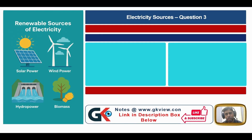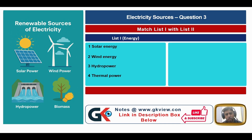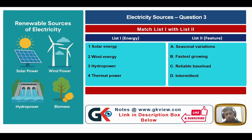Question number three: match List 1 with List 2. List 1 contains energy forms: 1) solar energy, 2) wind energy, 3) hydro power, 4) thermal power. List 2 contains features: A) seasonal variations, B) fastest growing, C) reliable base load, D) intermittent.